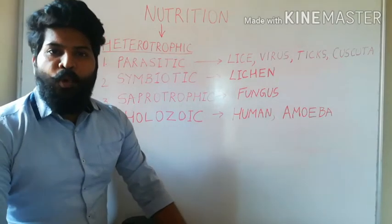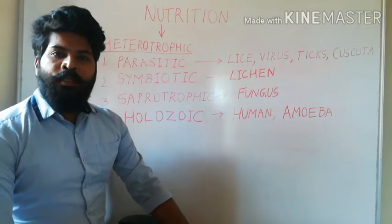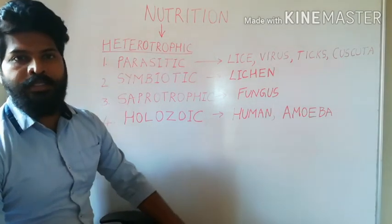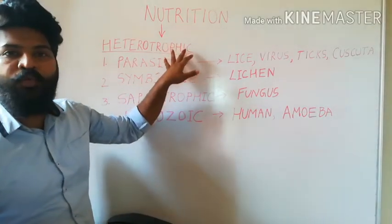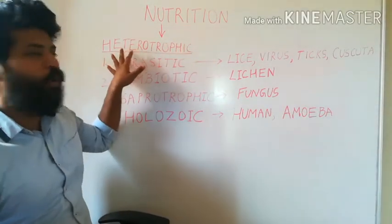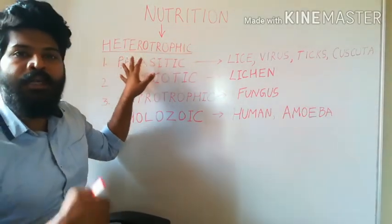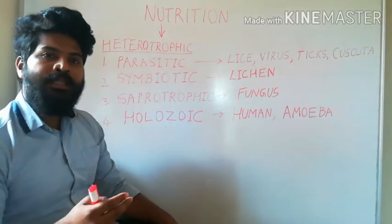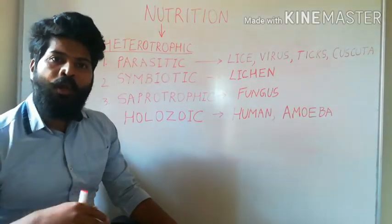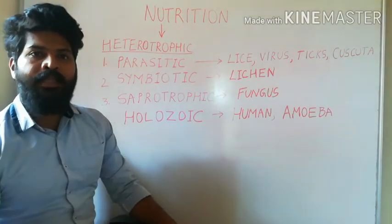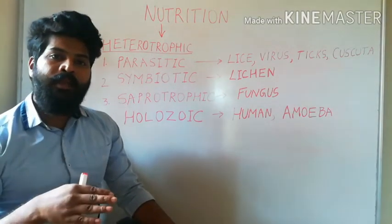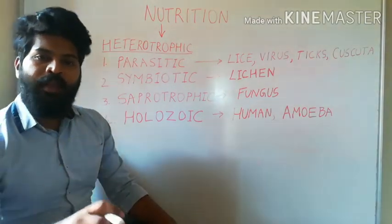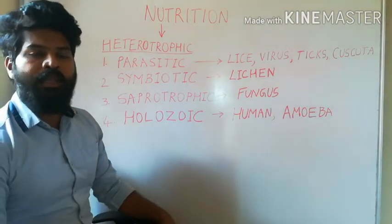The second mode of nutrition which organisms use to obtain food is known as heterotrophic nutrition. 'Hetero' means different — when organisms are dependent on other organisms, either living or dead, they obtain their food from other organisms.